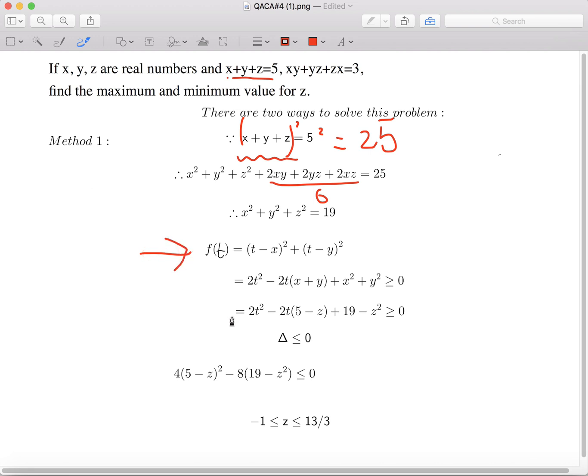Now comes the creative part. If we set a function ft equals to t minus x squared plus t minus y squared, we can have that ft is bigger or equal to 0.